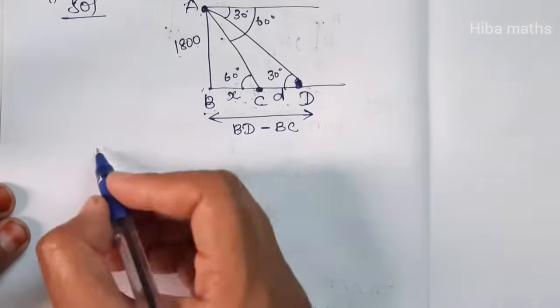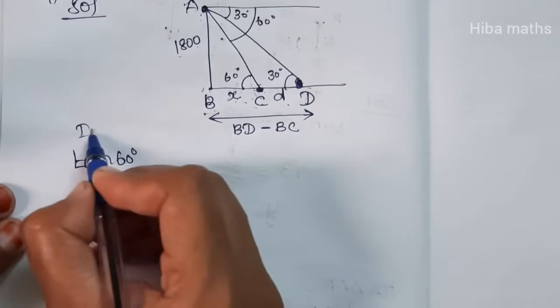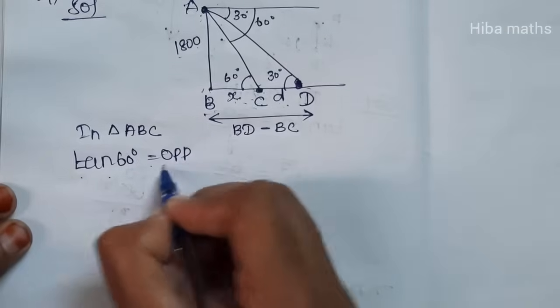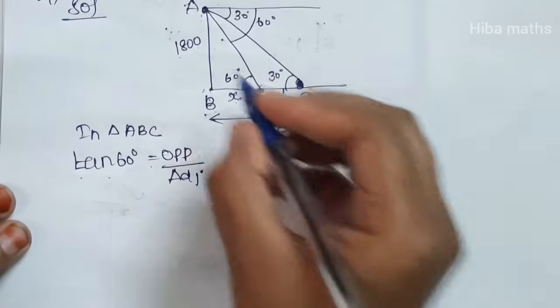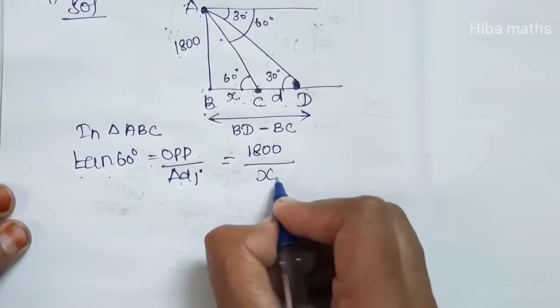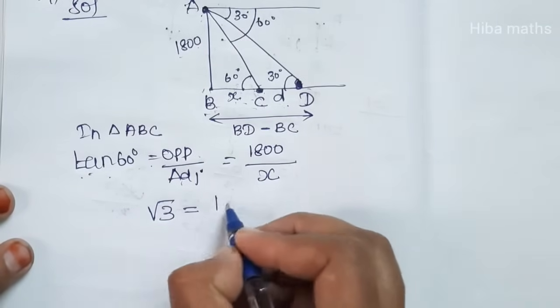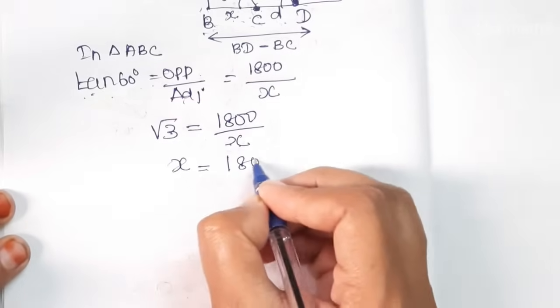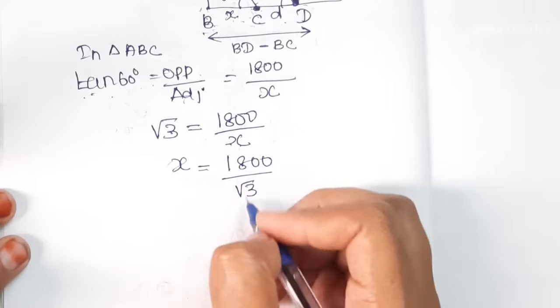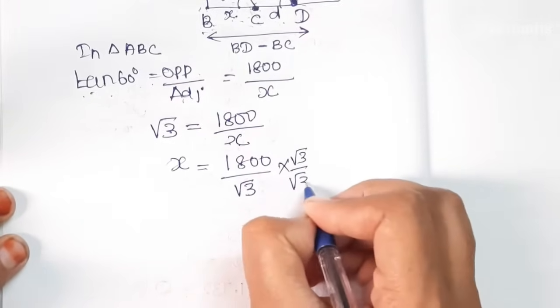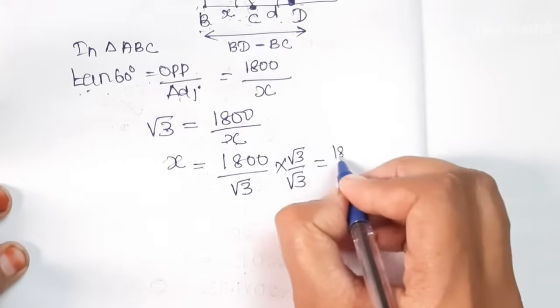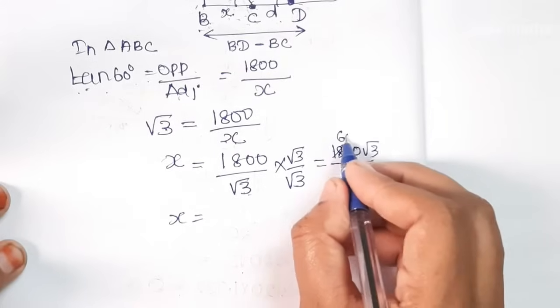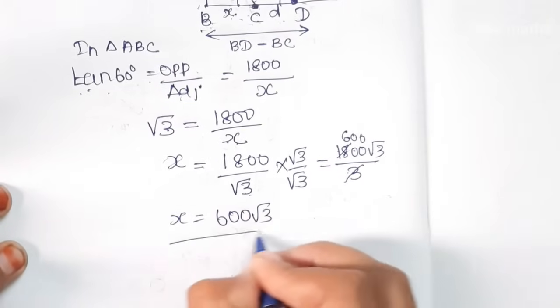First we will take tan 60 degrees in triangle ABC. Tan 60 is equal to opposite by adjacent. Opposite value is 1800, adjacent value is x. Tan 60 value is root 3 equals 1800 by x. So root 3 x equals 1800. x equals 1800 by root 3. Multiplying by root 3 over root 3, we get x equals 1800 root 3 over 3, which equals 600 root 3.